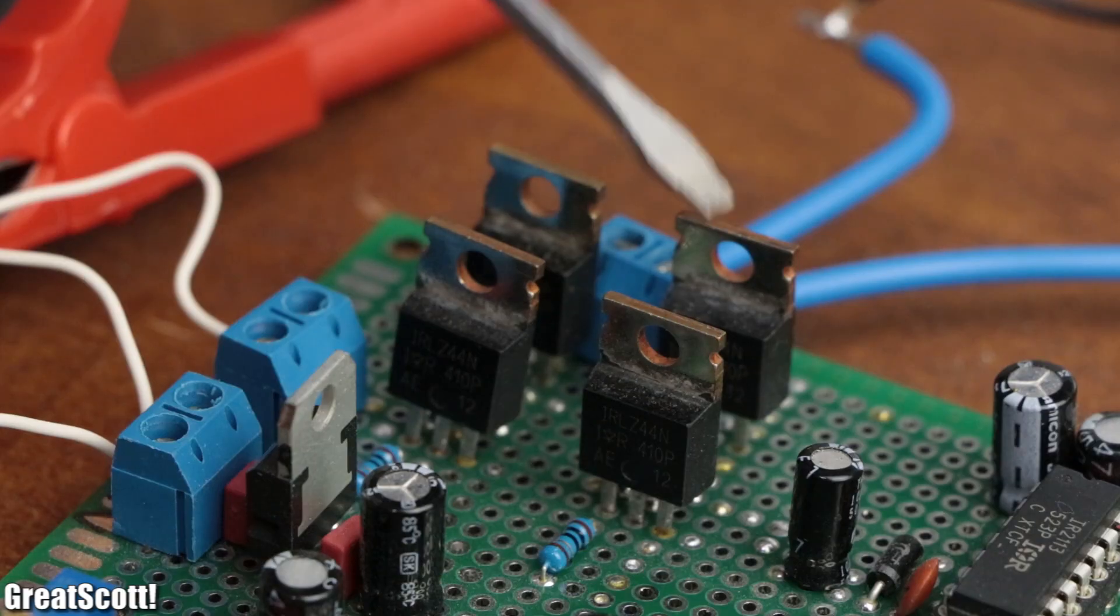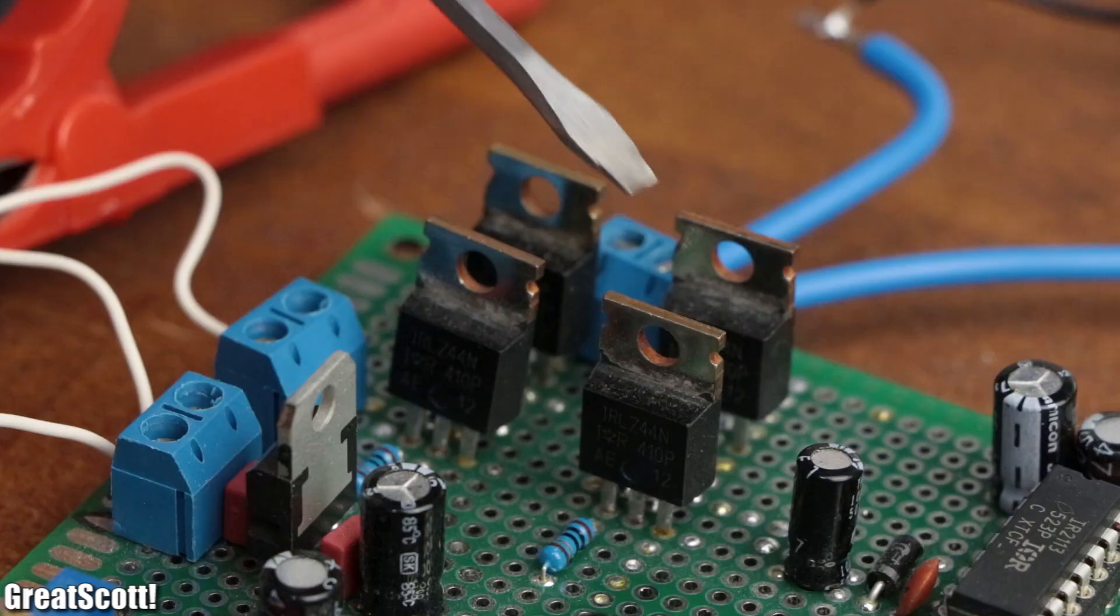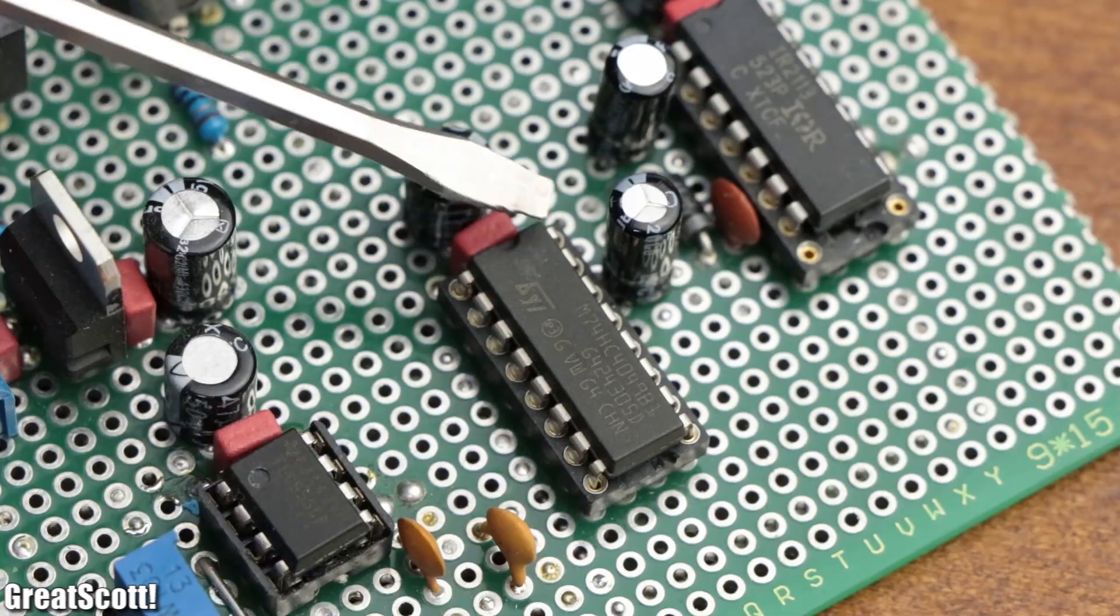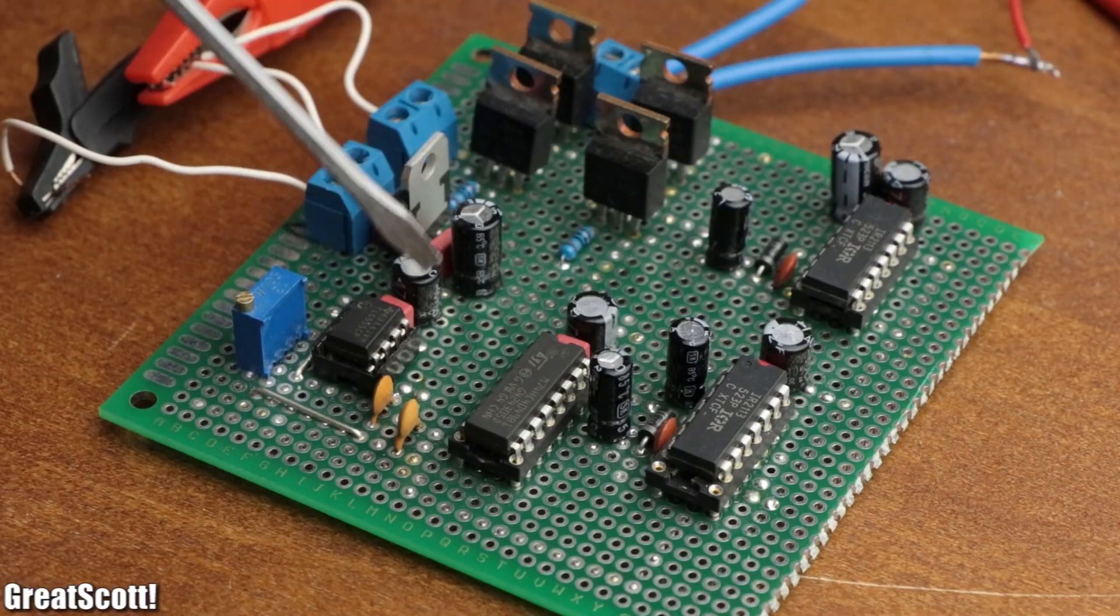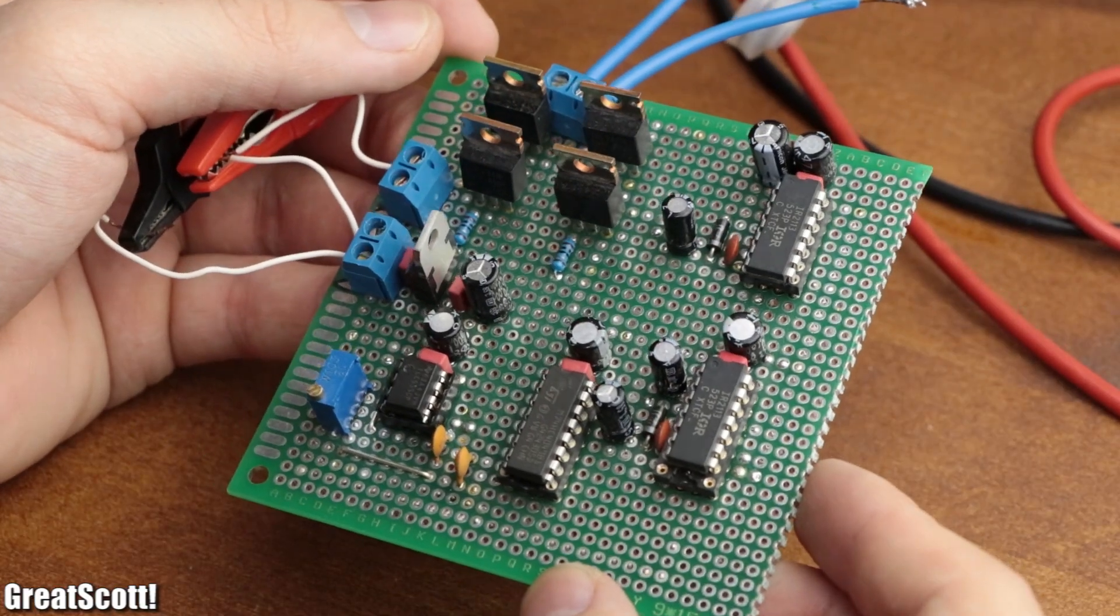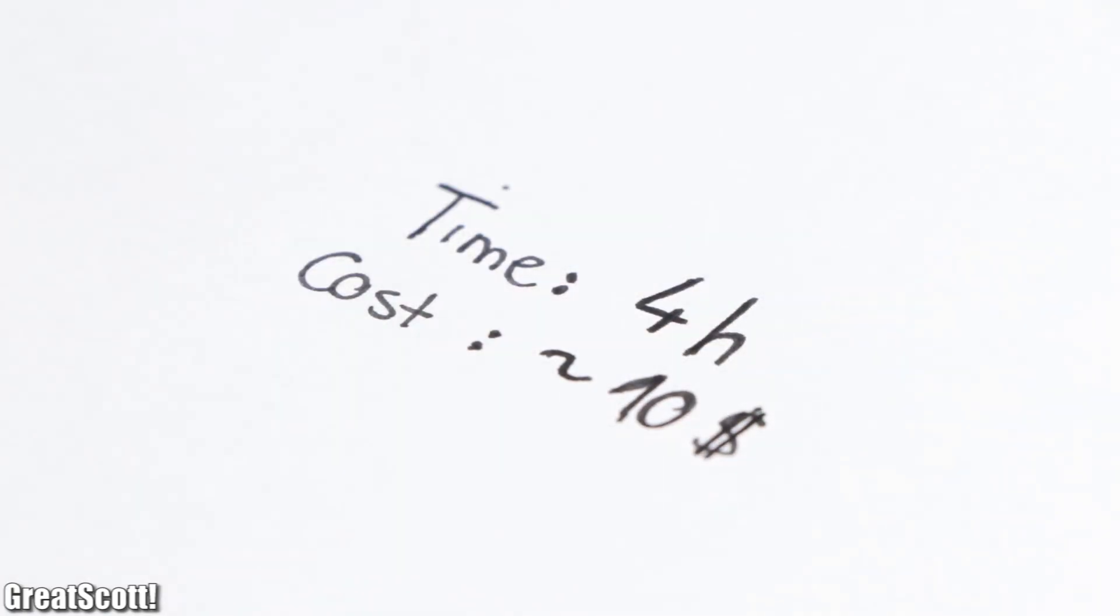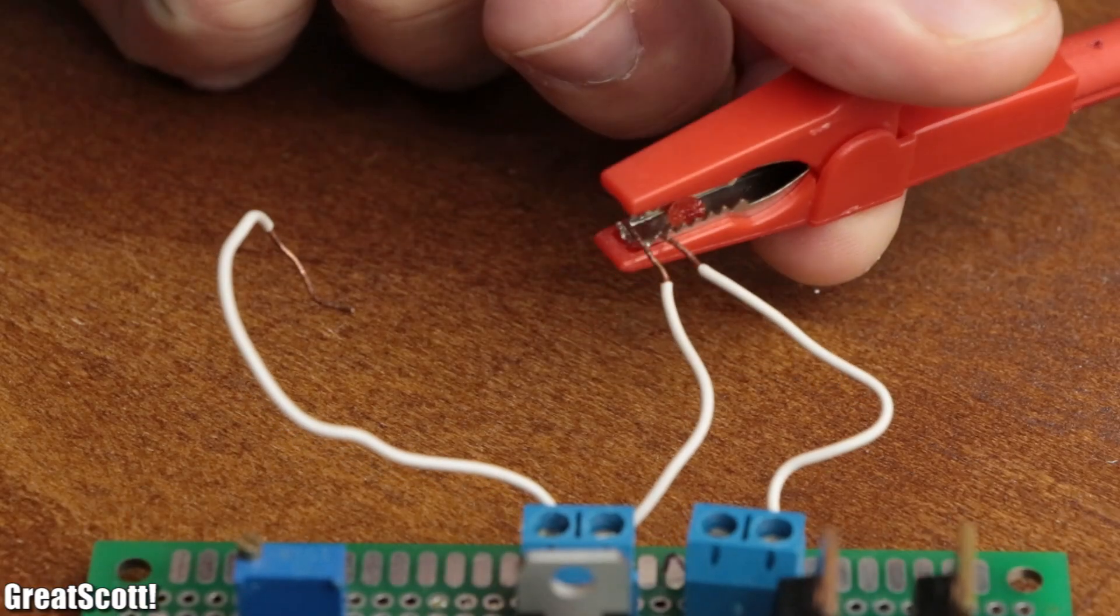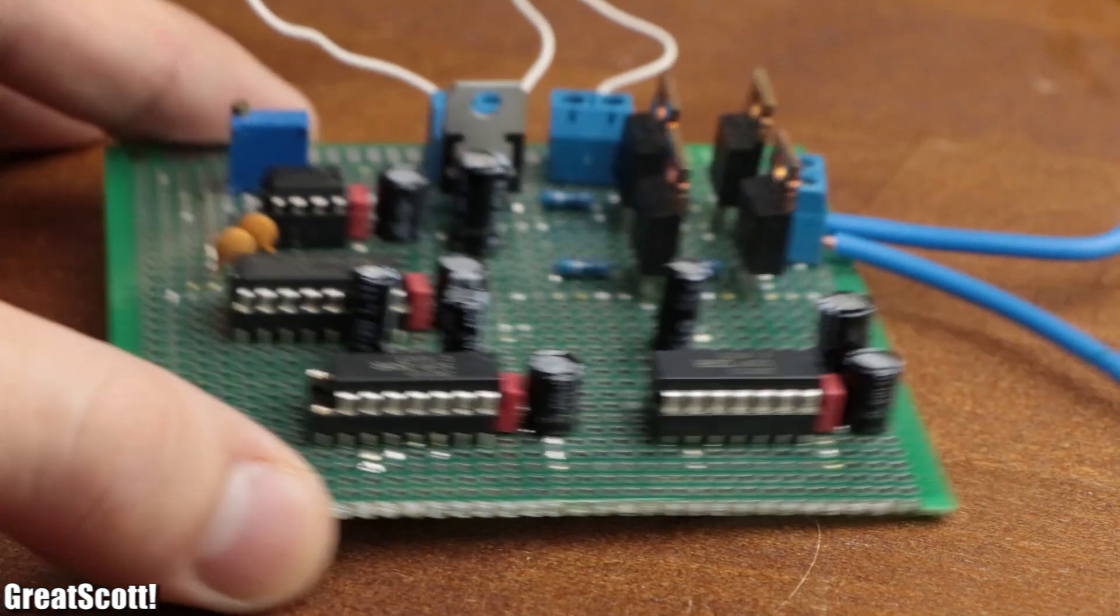But since my full bridge circuit consists of 4 MOSFETs, 2 MOSFET drivers, 1 555 timer, 1 hex inverter, dozens of passive components and a complicated schematic, it's not really worth building it for a mist maker due to its costs. But at least we got a proof of concept. So let's get rid of the full bridge and let's try something simpler.